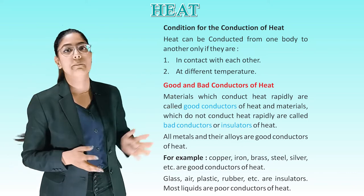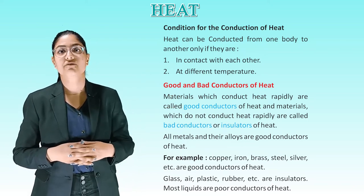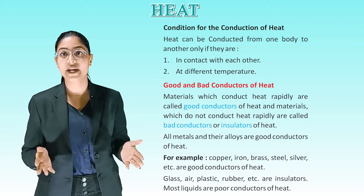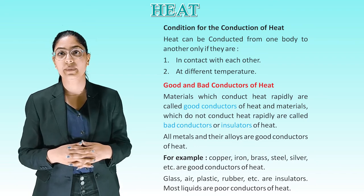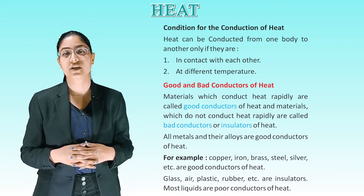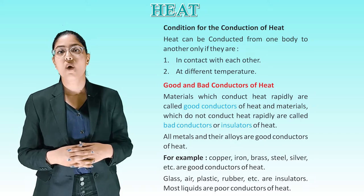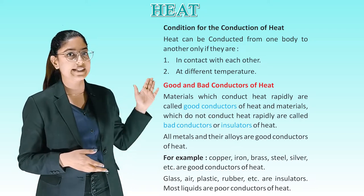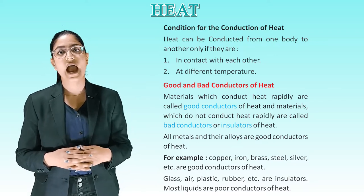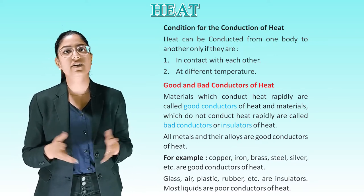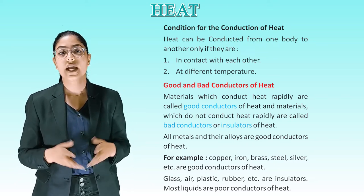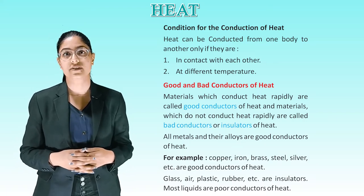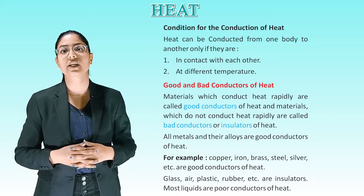Good and bad conductors of heat. Materials which conduct heat rapidly are called good conductors of heat, and materials which do not conduct heat rapidly are called bad conductors or insulators. All metals and their alloys are good conductors — for example, copper, iron, brass, steel, silver. Glass, air, plastic, and rubber are insulators. Most liquids are poor conductors of heat.